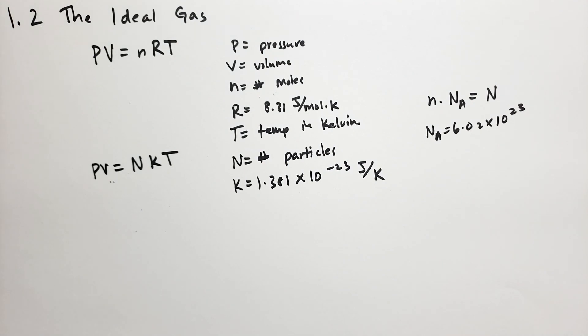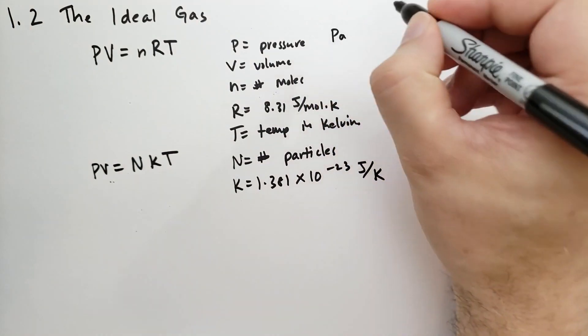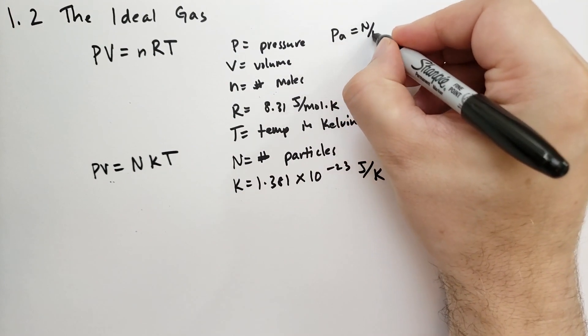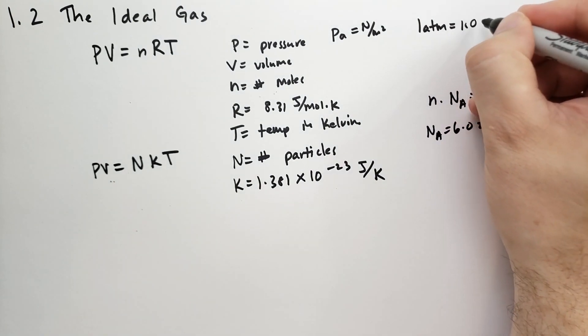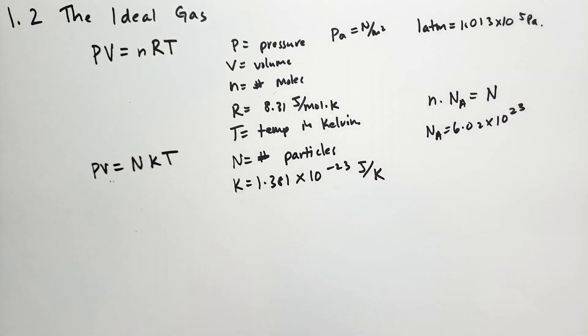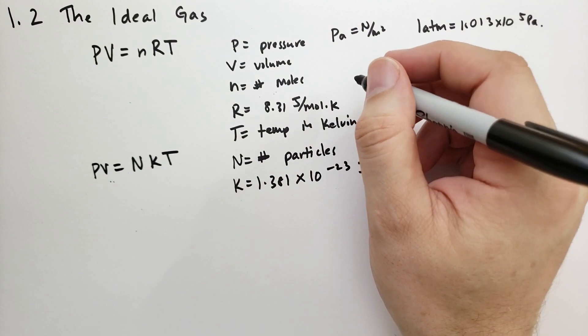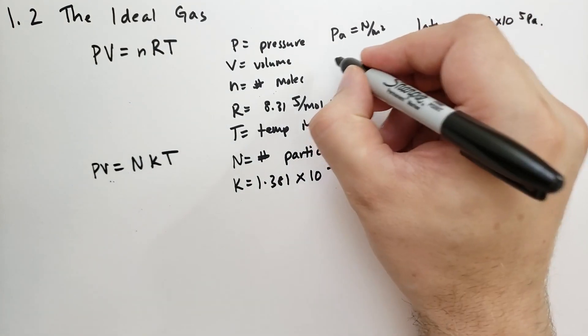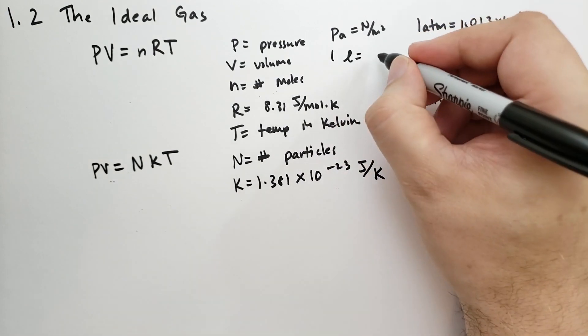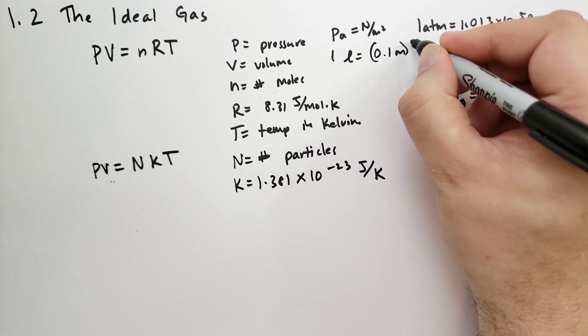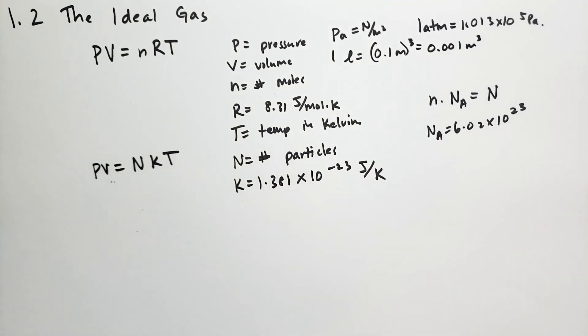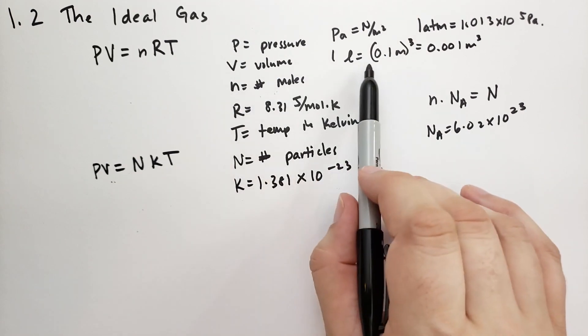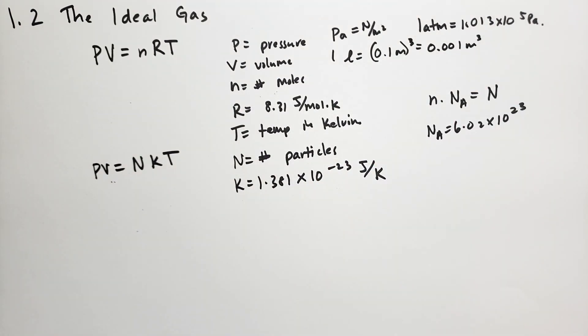One little note I should mention is our friends in chemistry sometimes measure pressure in atmospheres. We typically like to use Pascals. A Pascal equals a Newton per meter squared. Well, one atmosphere equals 1.013 times 10 to the 5th Pascals. They also like to use liters for volume. We prefer meters cubed. And one liter, the way to remember this is one liter equals 0.1 meters, and all of this cubed. So that's 0.001 meters cubed. So it takes 1,000 liters to fill one cubic meter.